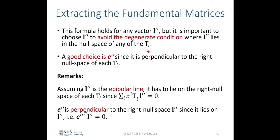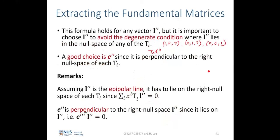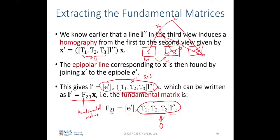This degeneracy occurs when the epipolar line of the three special points falls in the null space of Ti. We want to avoid the configuration where Ti * l'' = 0, which arises when l'' lies in the null space of Ti under the transfer of the three special points. When this occurs, the fundamental matrix between the first two views becomes undefined — this is the degenerate case.